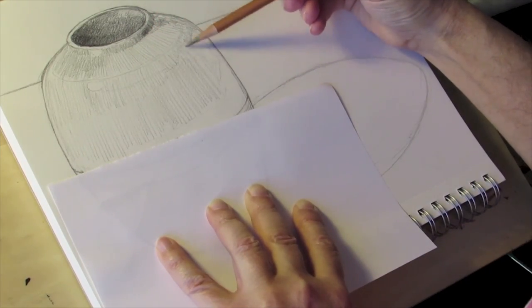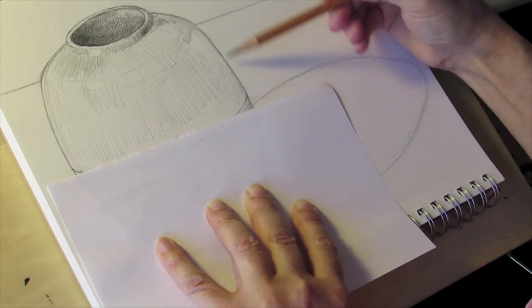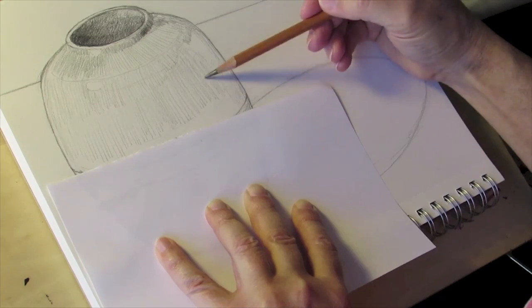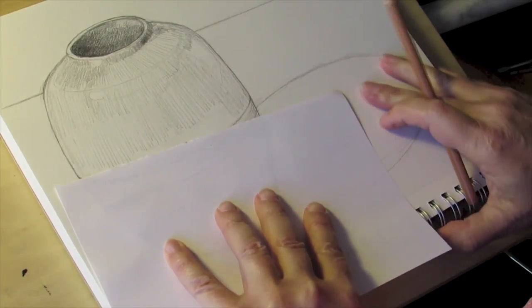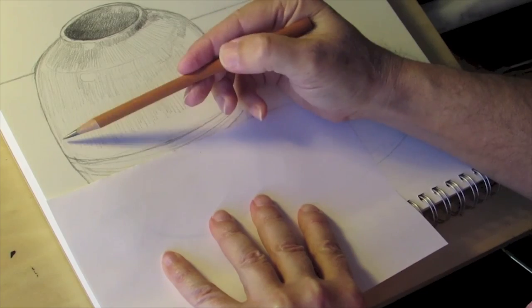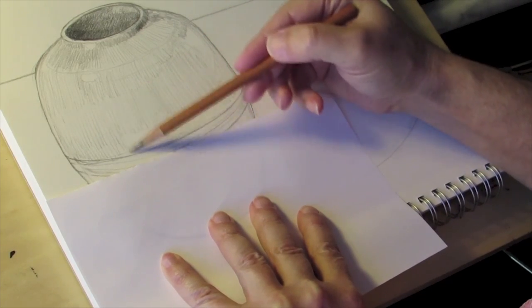Again, you'll notice that I change the directions of the lines as I move into different planes within the cylinder. So the direction of my marks is describing the direction of the surface that we're looking at.